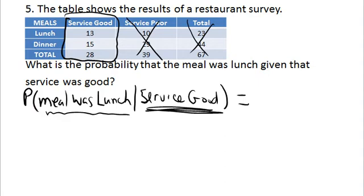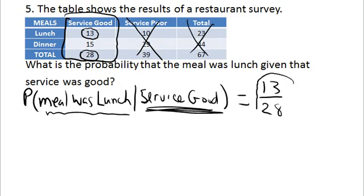That's easy as well. 13 out of a total of 28. So the probability is 13/28 that the meal was lunch given that the service was good. It's just straightforward conditional probability. The sample space was reduced by ignoring the last two columns because we were given that the service was good, implying that only the first column mattered.